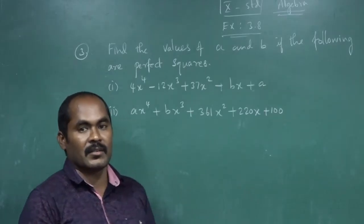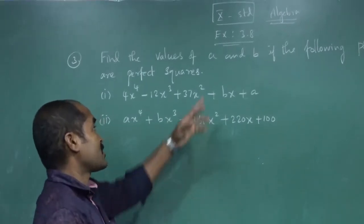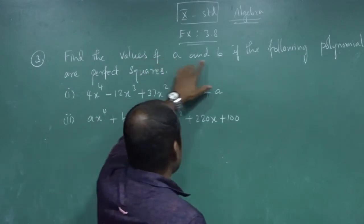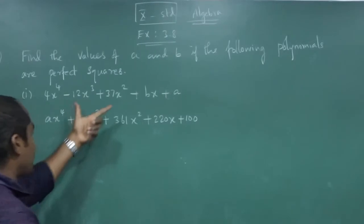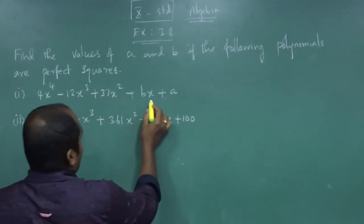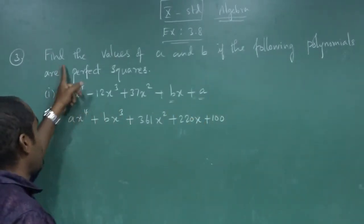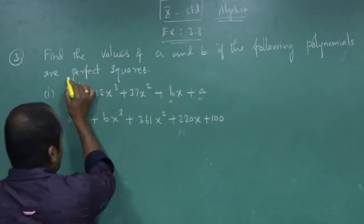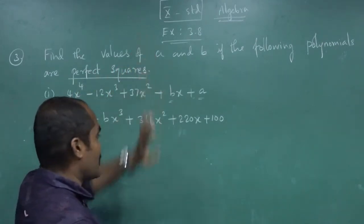Hi students. Now I am going to teach 10th algebra, Exercise 3.8, third sum. Find the values of A and B in the following polynomials if they are perfect squares. So the given polynomial is a perfect square, and we want to find the unknown values A and B. This is important — the polynomial is a perfect square.